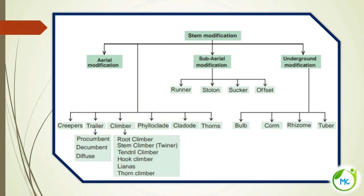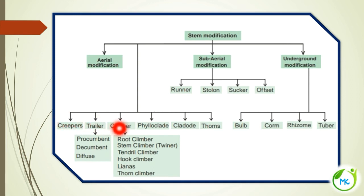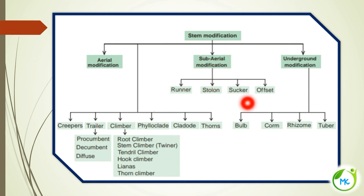We have seen stem modification under three headings: aerial modification — creeper, trailer, climber, phylloclade, cladode, and thorn; under trailer — procumbent/prostrate, decumbent, and diffuse; under climber — root climber, stem climber, tendril climber, hook climber, liana, and thorn climber. Subaerial stem modification has four kinds: runner, stolon, sucker, and offset. Underground modification includes bulb, corm, rhizome, and tuber.